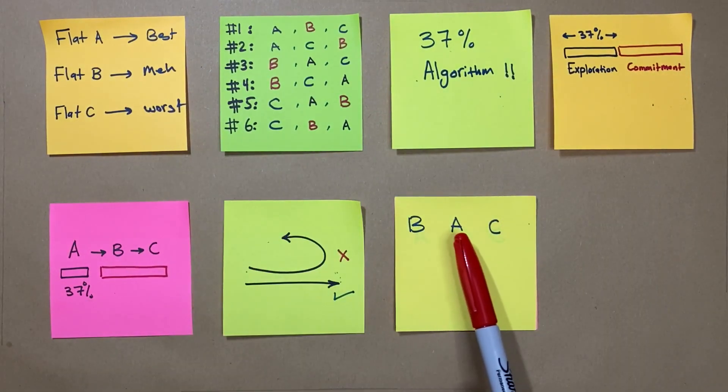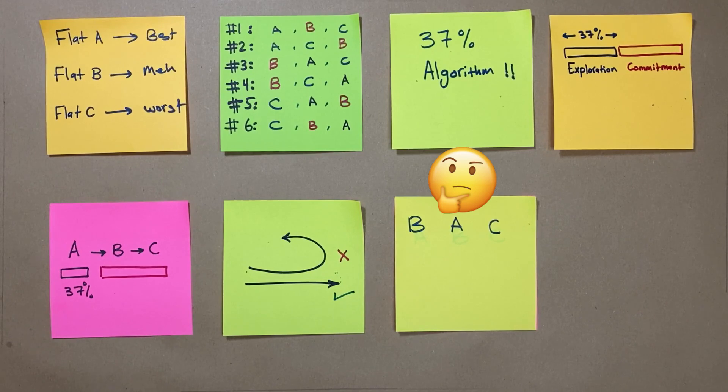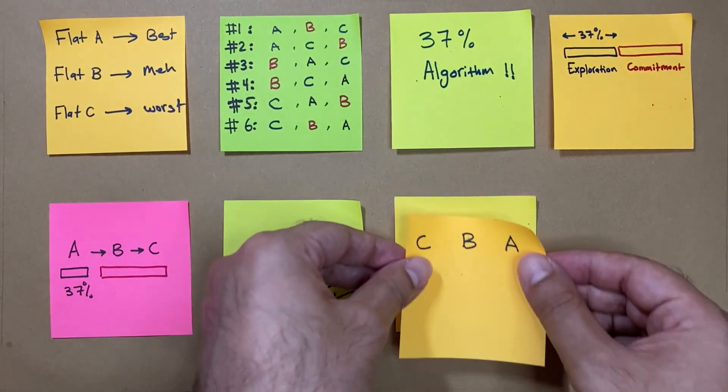Flat B, then A, then C. In the exploration phase, Ted explores flat B. And then in the commitment phase, he examines flat A and compares it to B. Since flat A is better than B, he commits to it. What a success! Let's check this.